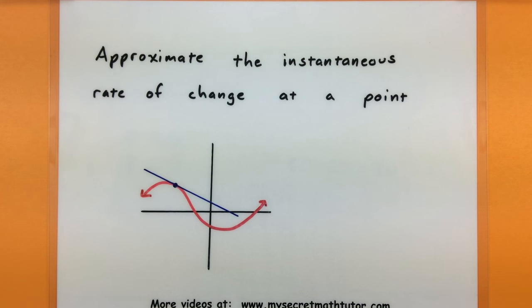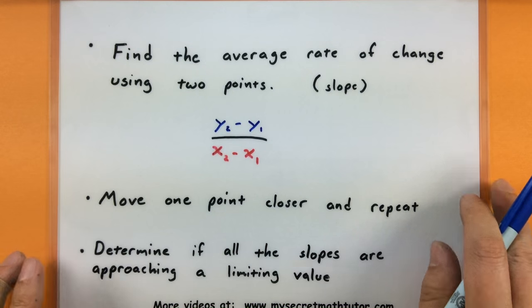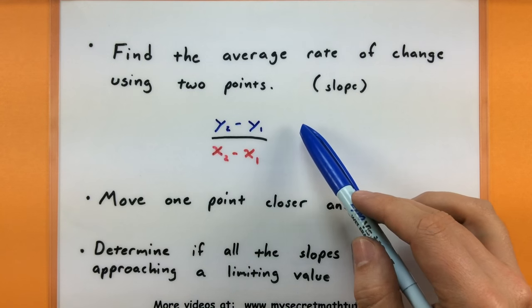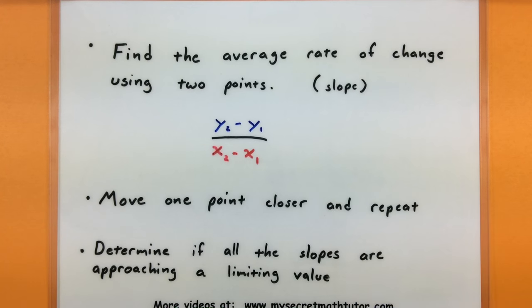Now the process for this is fairly simple, and it really just involves using your regular old everyday slope formula. So let's see what that process looks like. First of all, we'll use our given point and another point, and we'll compute what we call the average rate of change between those two points. Now don't worry about the name, it's essentially just figuring out the slope between those two points.